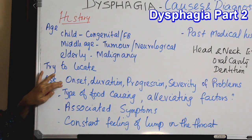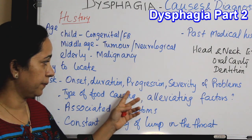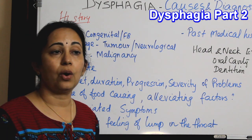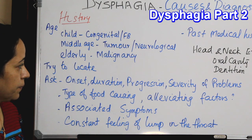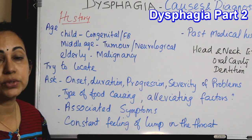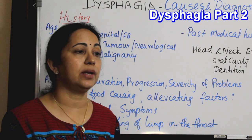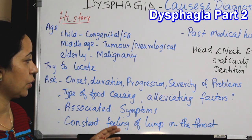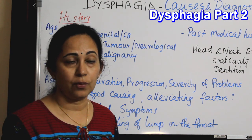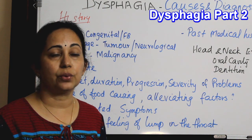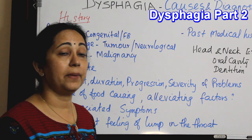Ask about the onset of dysphagia: how did it start, how long have they had the problem, and what is the duration. Is it progressing or has it stayed at the same severity as at the early stage? Then ask about the severity of the problem, the type of food causing dysphagia — is it more for liquids, solids, or semi-solids? Are there any alleviating factors like antacids? What is the patient doing to alleviate the problem, are they taking any medication, and are they getting better with medication?